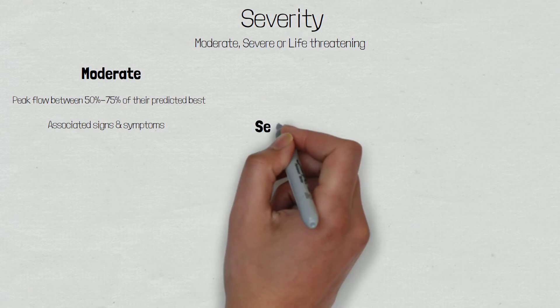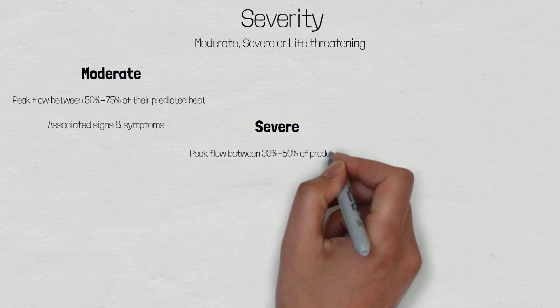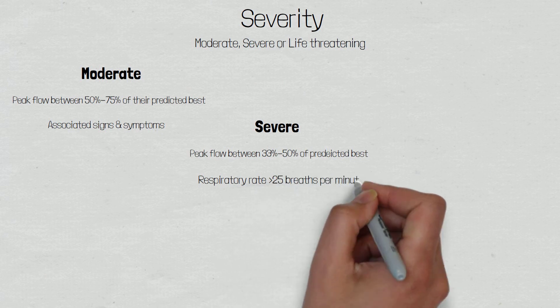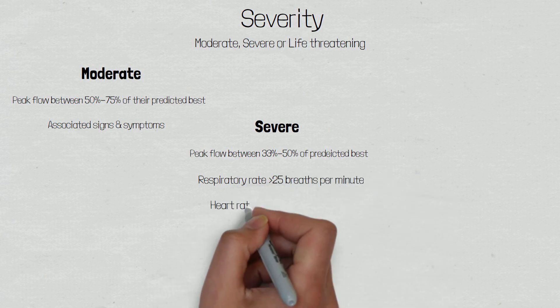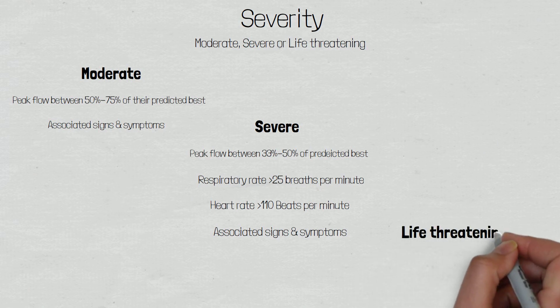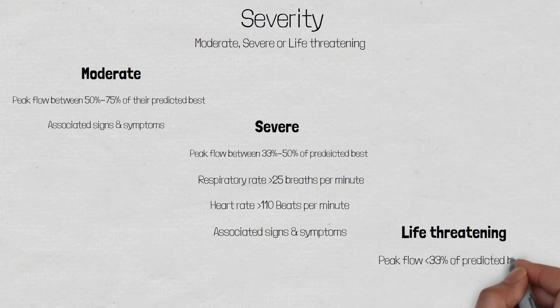Patients with severe asthma will have a peak flow between 33% and 50% of their predicted best, a respiratory rate greater than 25 breaths per minute, and a heart rate greater than 110 beats per minute, with associated signs and symptoms. Life-threatening asthma will present with a peak flow of less than 33% of predicted best, although you may struggle to get a life-threatening asthma patient to perform the test. They will have saturations less than 92% on air, they may be tiring, and they may have a silent chest.